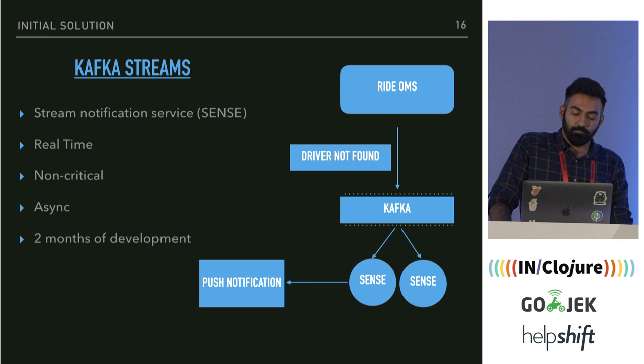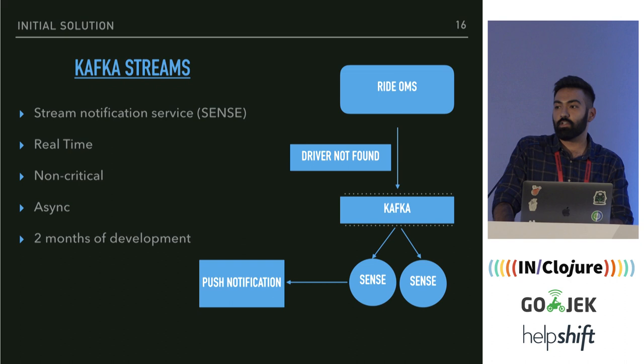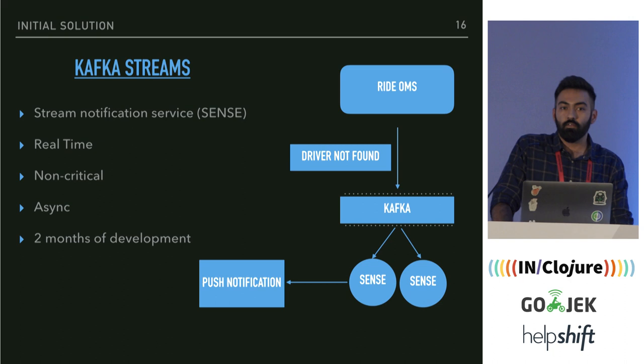We started with a service called Stream Notification Service. Whenever a driver is found for you, we send you a notification. Initially, Ride Service would call a push notification service directly. We thought this could be pulled out as an async call, and since missing a notification isn't critical, this could be a good proof of concept. It took us two months to develop this service using Kafka Streams.